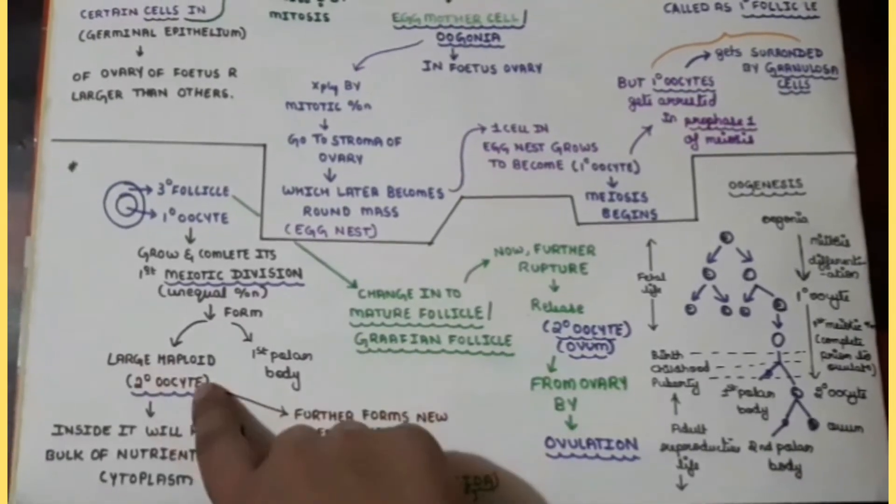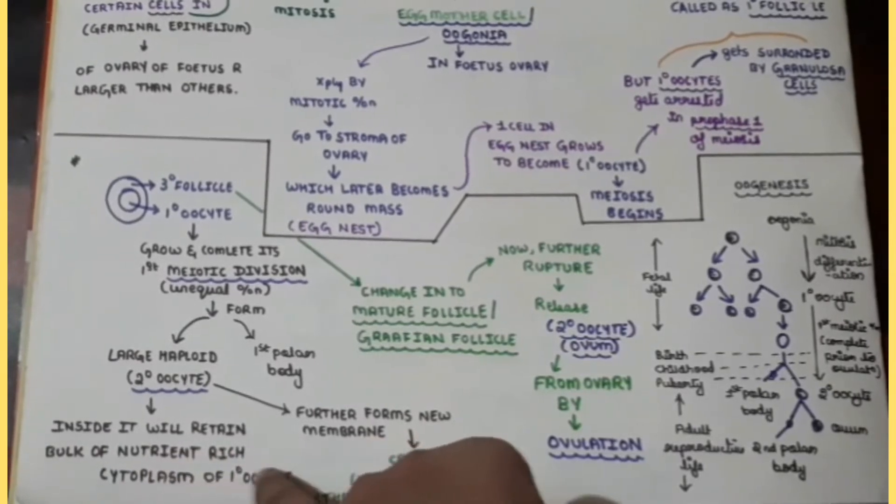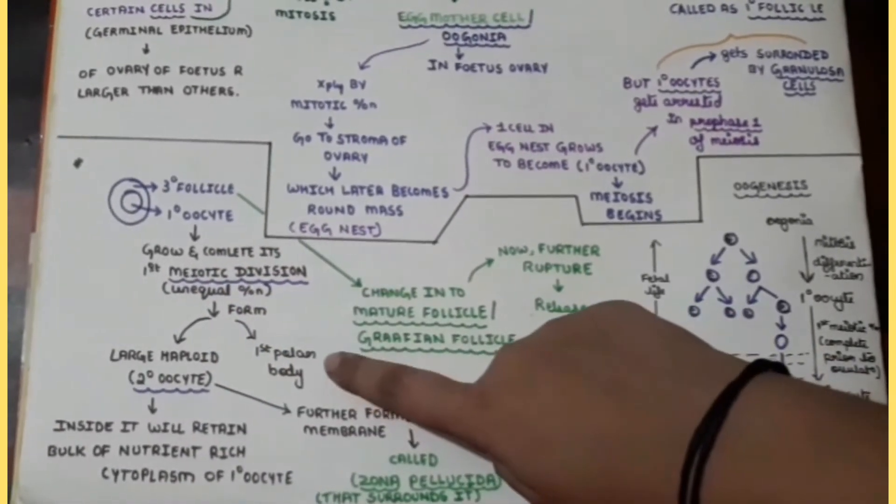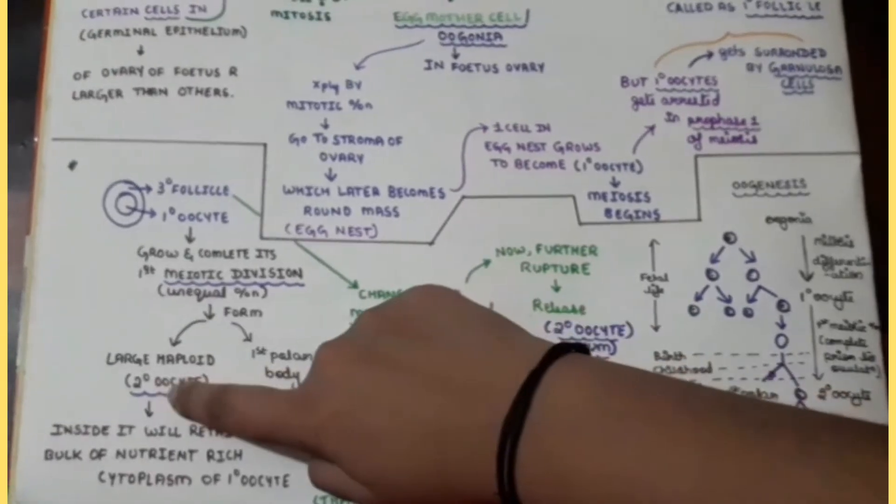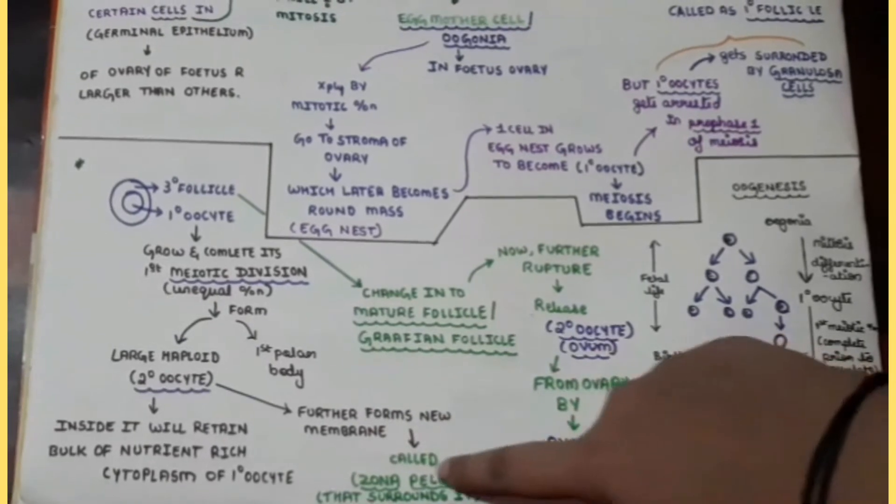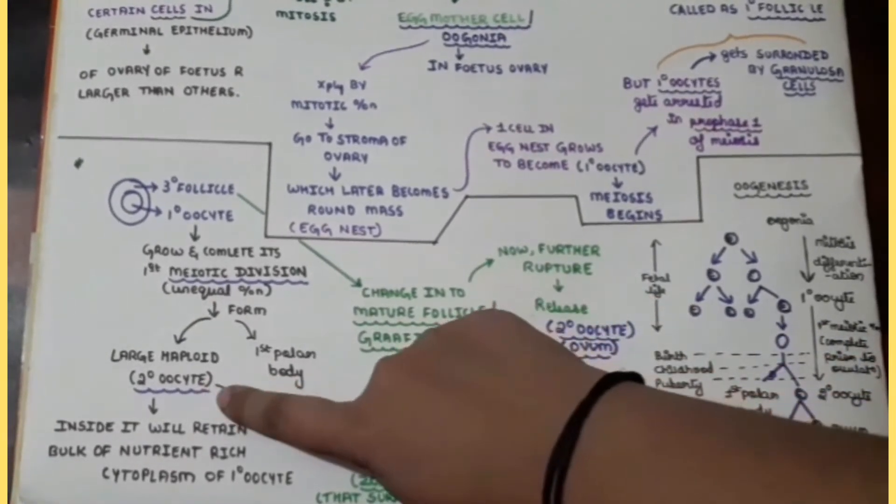So this secondary oocyte will be having inside it a bulk of nutrient-rich cytoplasm of this primary oocyte and this polar body will be present as such. The secondary oocyte will form new membrane that is called as zona pellucida which will be surrounding the secondary oocyte.